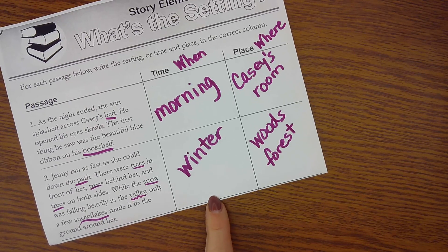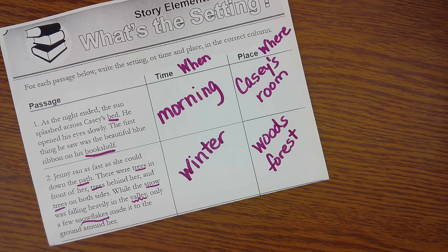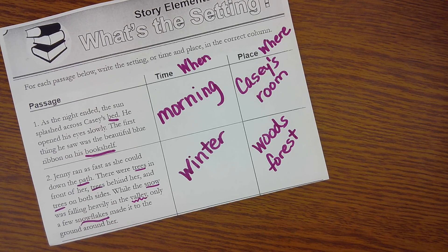Once again, the character is Jenny — she's the main character, the only one we've seen and heard about so far. And as my thinking voice is going on, I'm wondering where she's running to. It says she ran as fast as she could down the path. That makes me wonder: where are you going? Why are you running? So my thinking voice is always working when I'm reading.